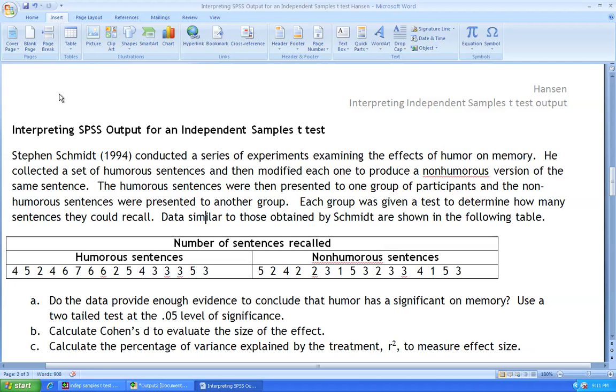The same example that was used to illustrate data entry and running an independent samples t-test in SPSS will be utilized for this example as well. The questions are: do the data provide enough evidence to conclude that humor has a significant impact on memory? We are asked to use an alpha two-tailed at the .05 level of significance and also to calculate Cohen's D and R squared as measures of effect size.